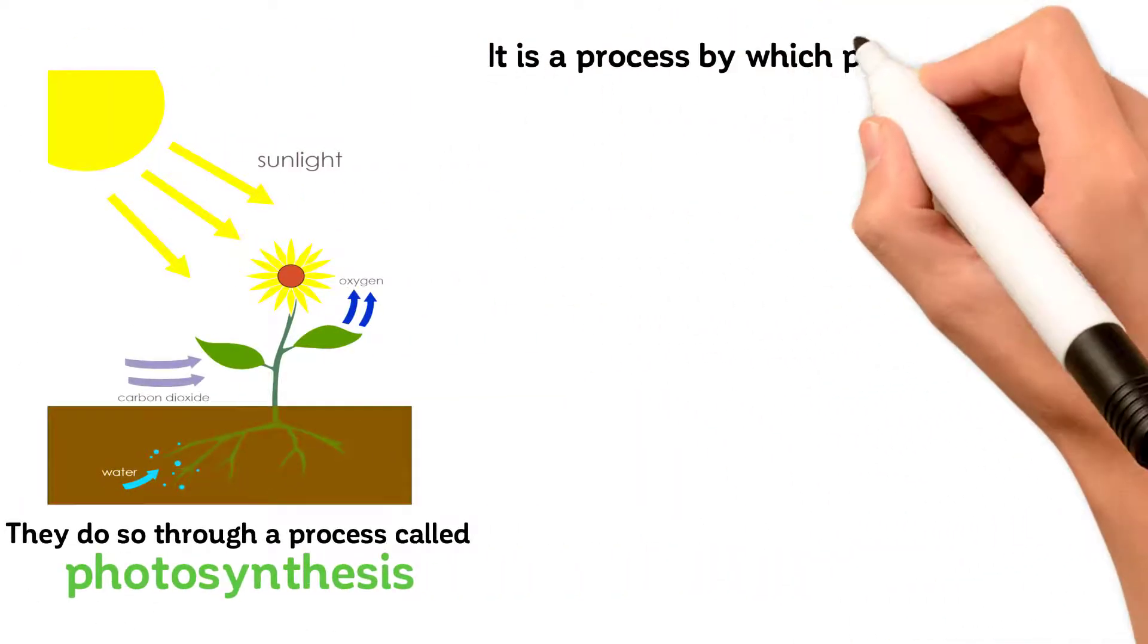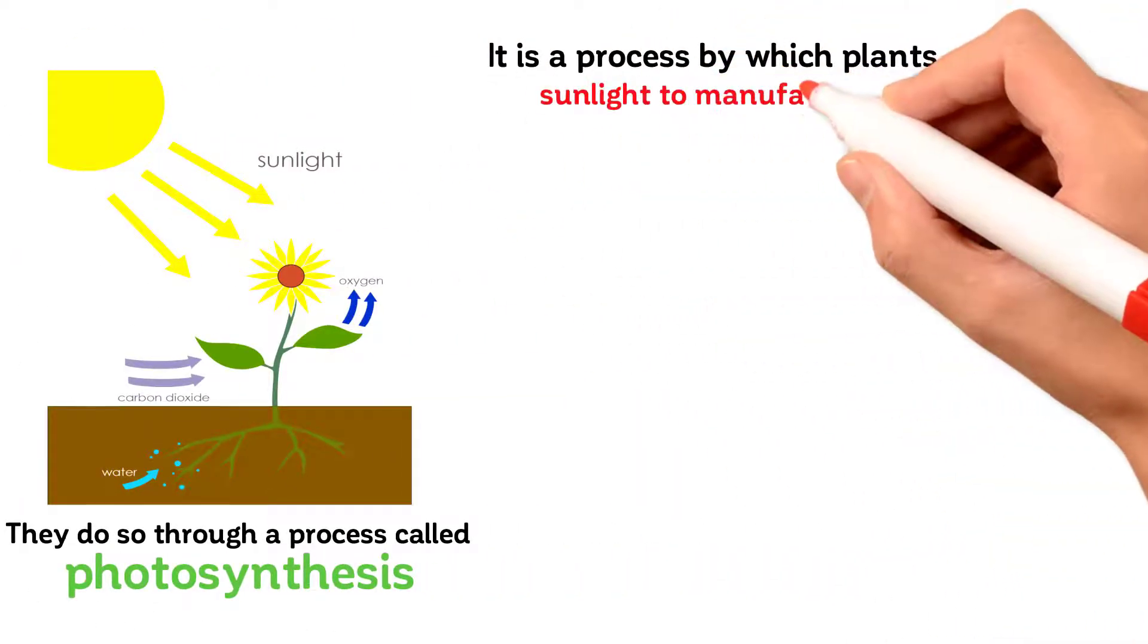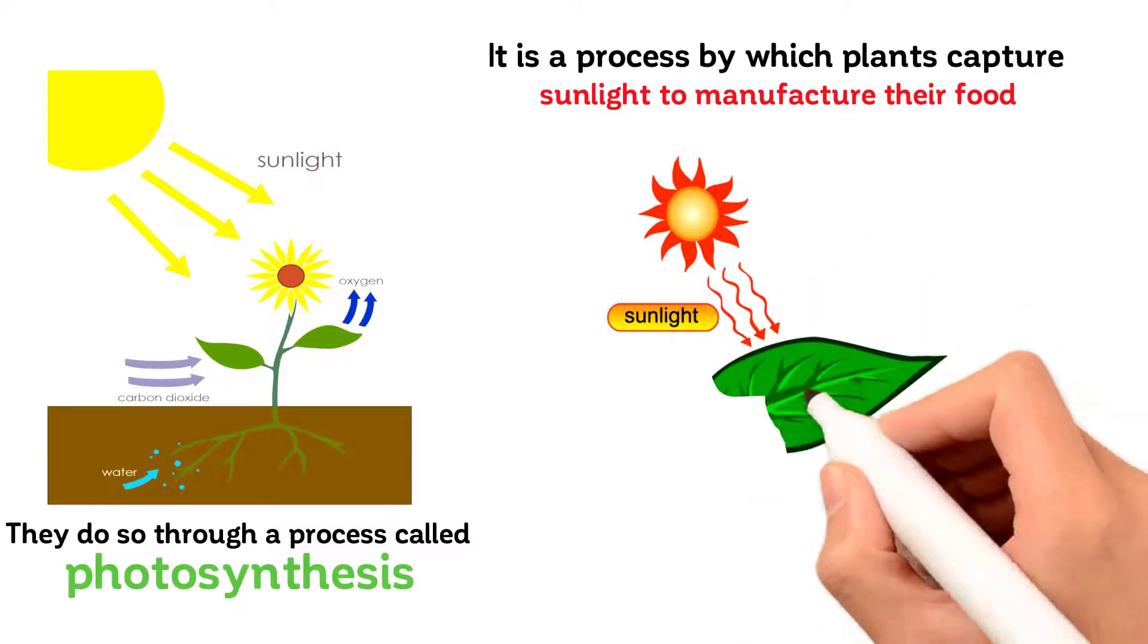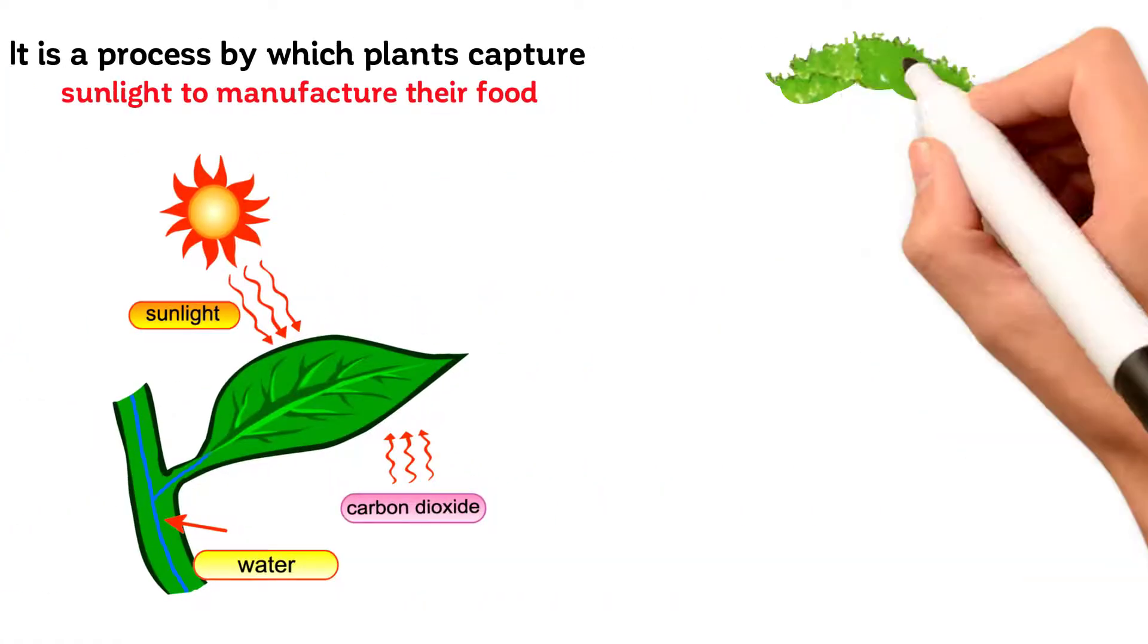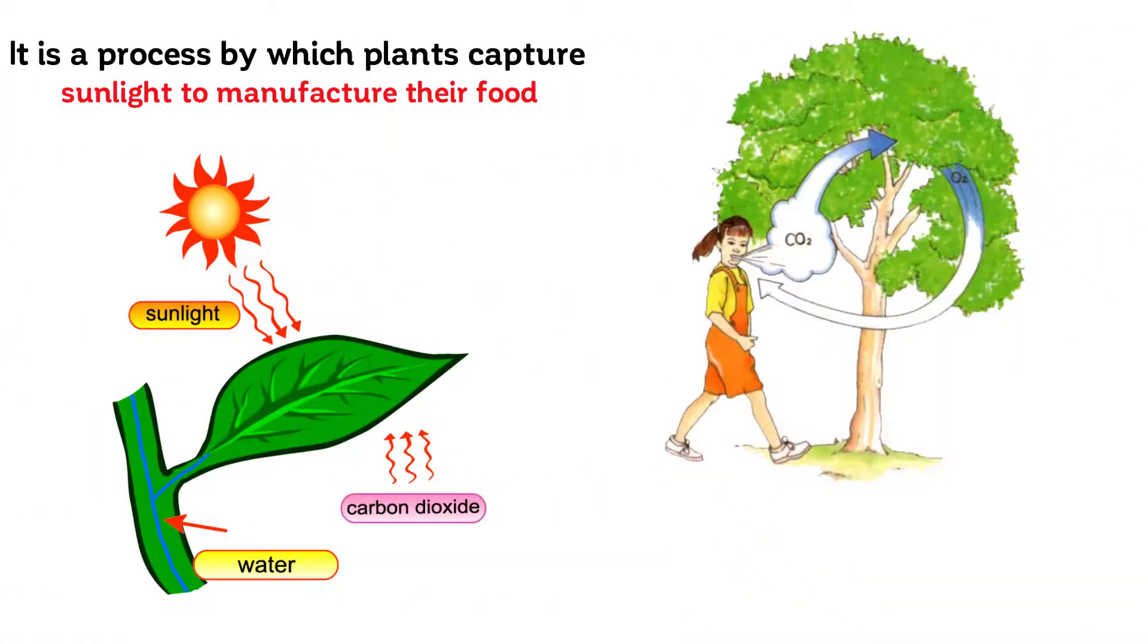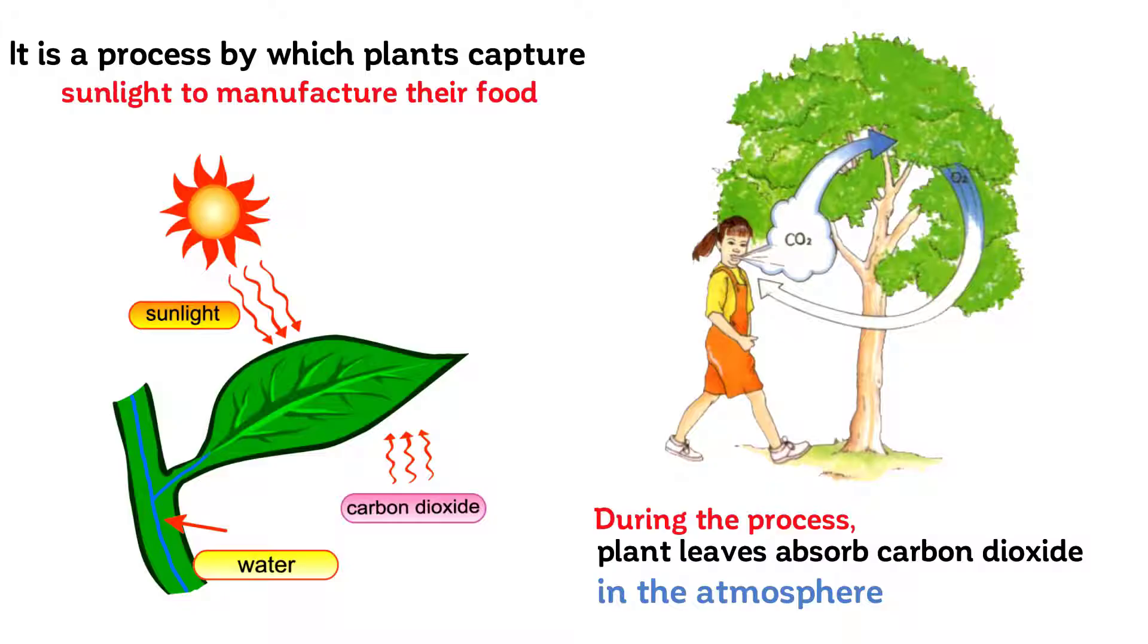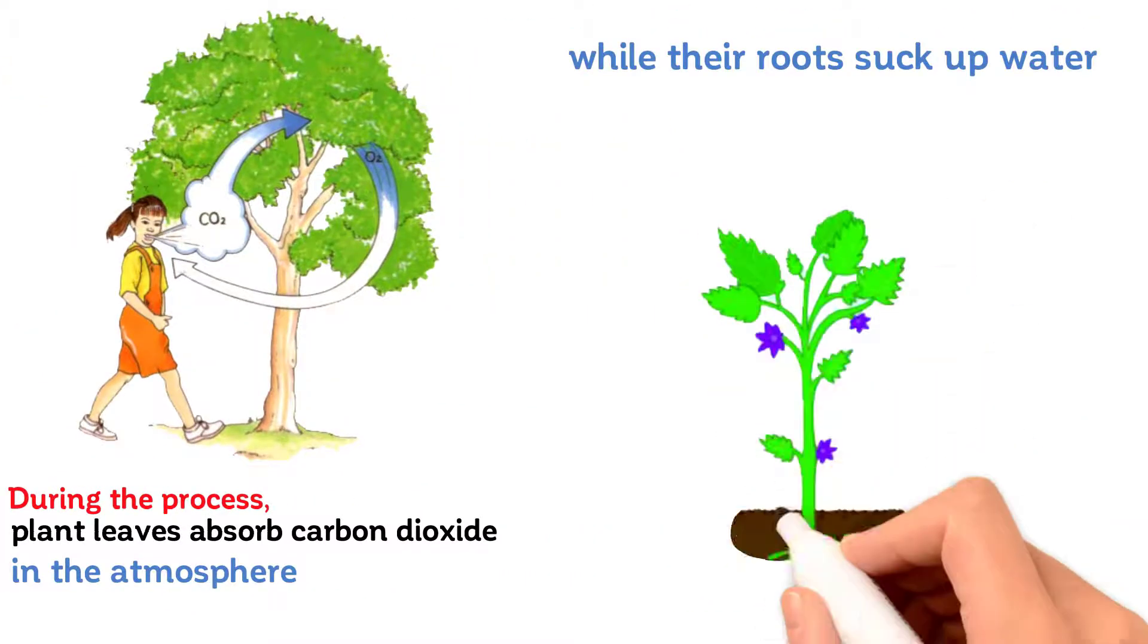It is a process by which plants capture sunlight to manufacture their food. During the process, plant leaves absorb carbon dioxide in the atmosphere, while their roots suck up water from the soil.